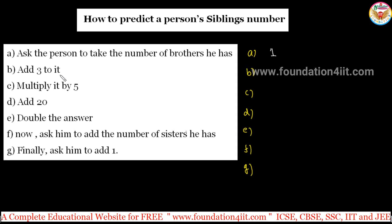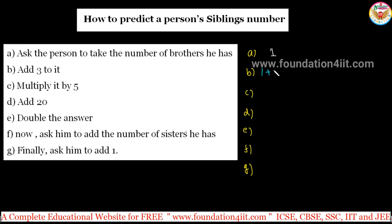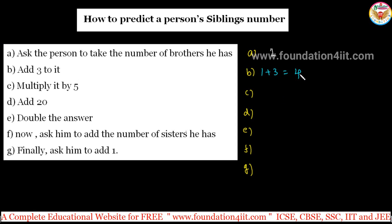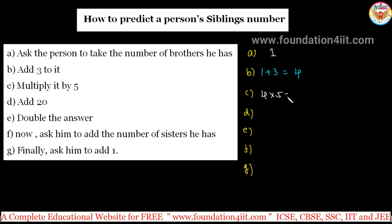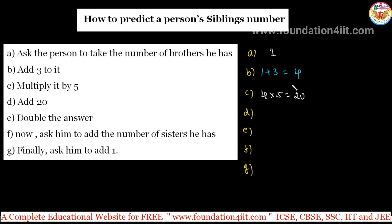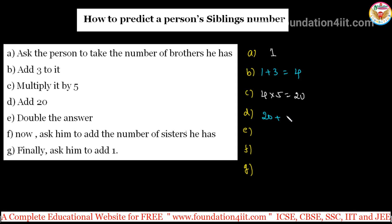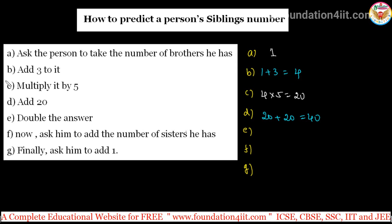Next step: ask them to add three to that number. So adding three to one gives four. Keep that in mind — second step result is four. Next, multiply it by five. Four times five is 20, so 20 is in mind now. Then add 20 to whatever answer they got. Previous 20 plus another 20 equals 40.